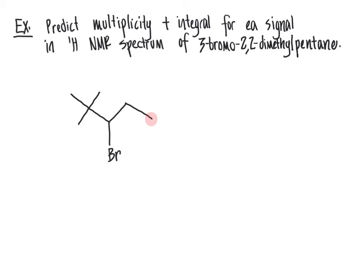Starting at the far right-hand side, the terminal methyl group will show up as its own signal — highlighted in pink — because no other protons are totally symmetrical to it. The CH2 group is highlighted in blue, also its own signal. The CH group directly bonded to the bromine shows up as its own single signal in green. The next carbon has no hydrogens directly bonded, so don't be tricked into thinking there's a proton there. Finally, the three methyl groups at the end are all equivalent due to free rotation around the carbon-carbon single bond, all bonded to exactly the same carbon. So the total number of signals in this NMR spectrum is four.